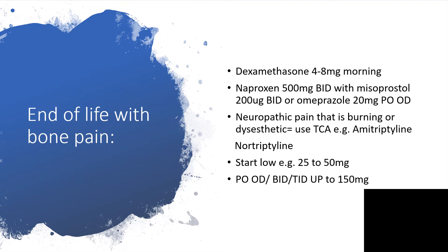For neuropathic pain that is burning or dysesthetic, we can use tricyclic antidepressants, for example amitriptyline. I will use nortriptyline in the elderly. We start low, as low as 25 milligrams to 50 milligrams, and give the dose once daily. Depending on severity you could go to twice daily or three times a day, up to a maximum of 150 milligrams. Watch out for side effects, which must be thoroughly explained to the family members.